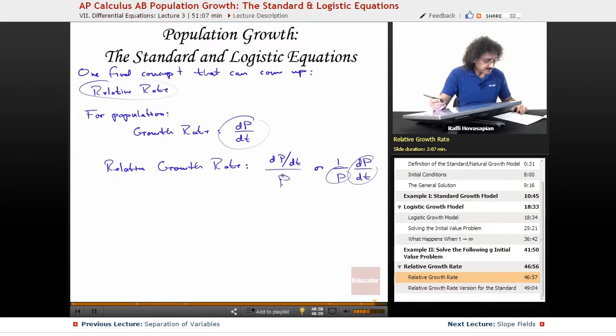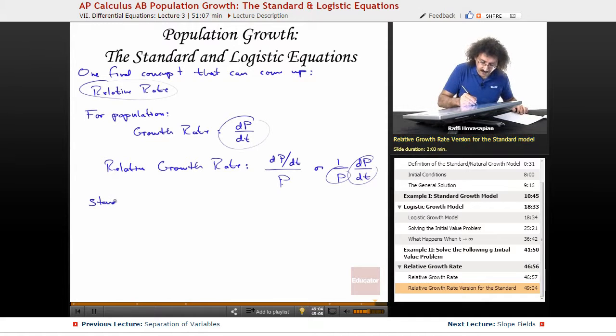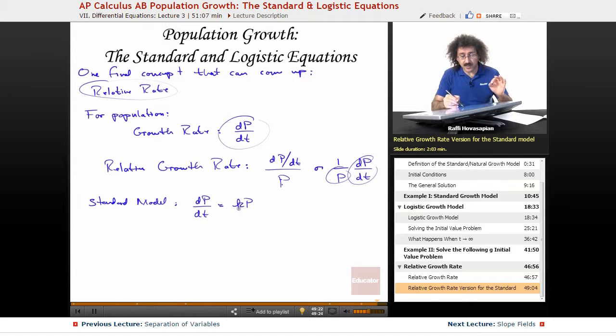So in terms of equations, it's going to look like this. For the standard model, we said that dp/dt is equal to kP, right? The rate of growth is directly proportional to the population at the time. Relative growth version is this.